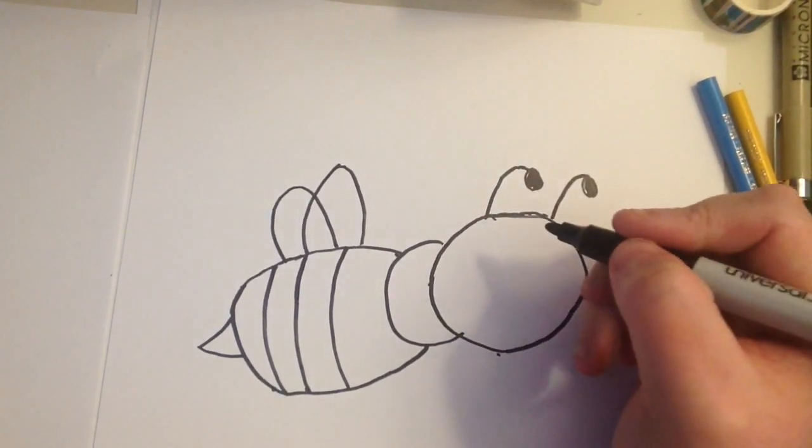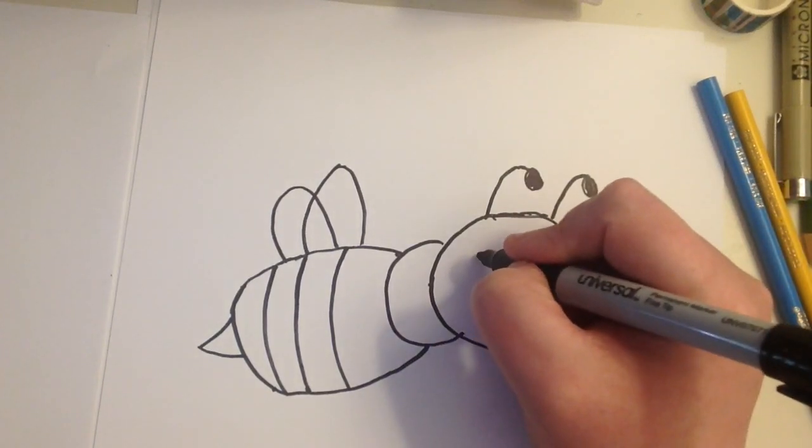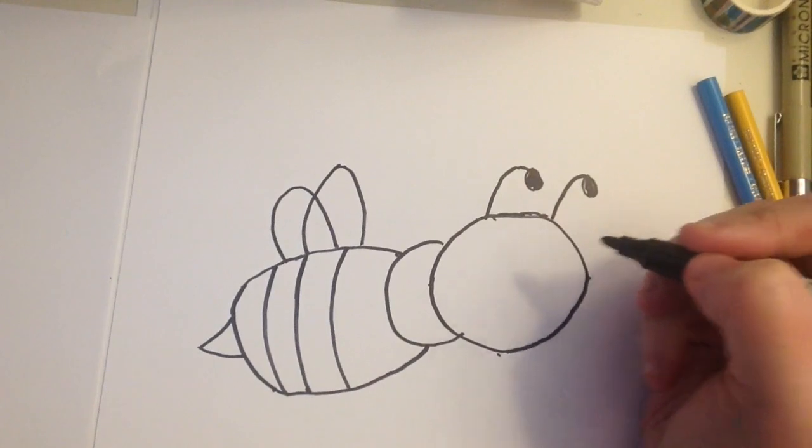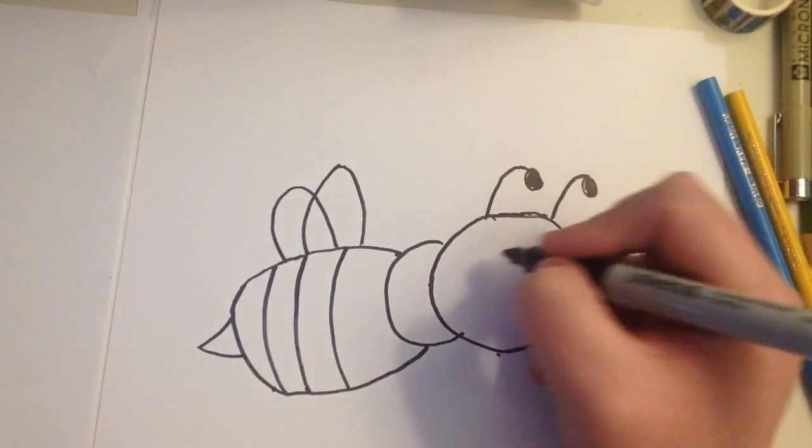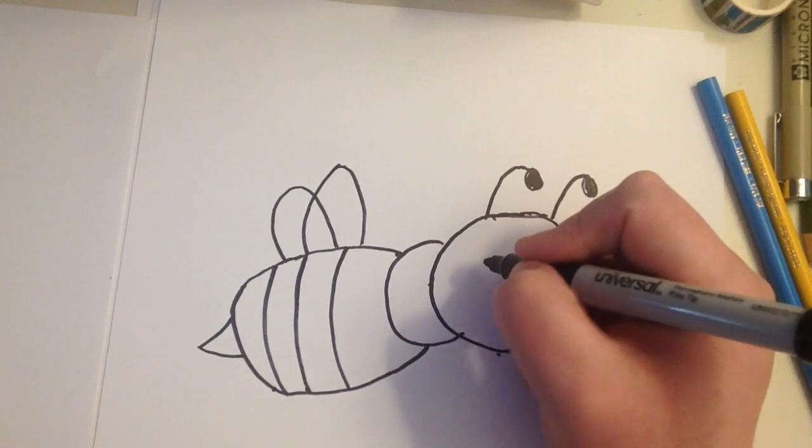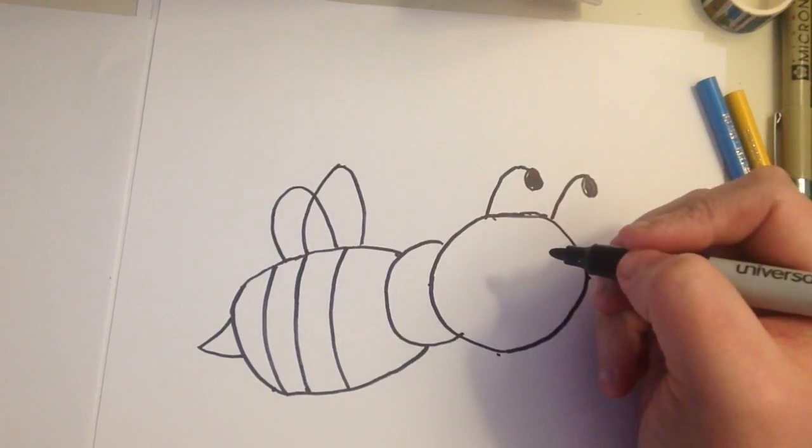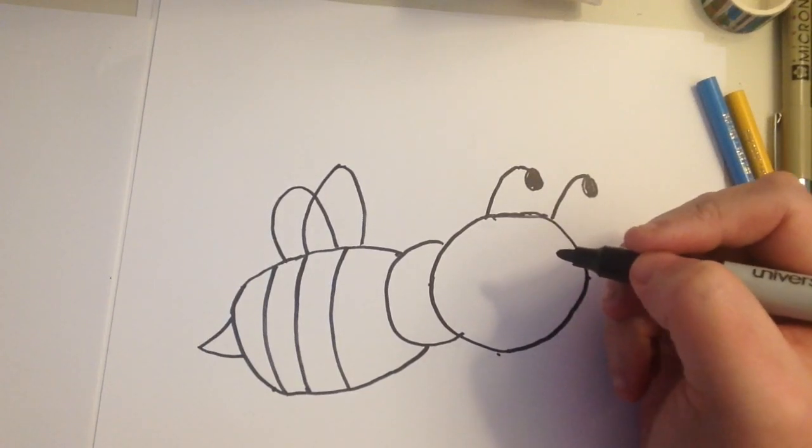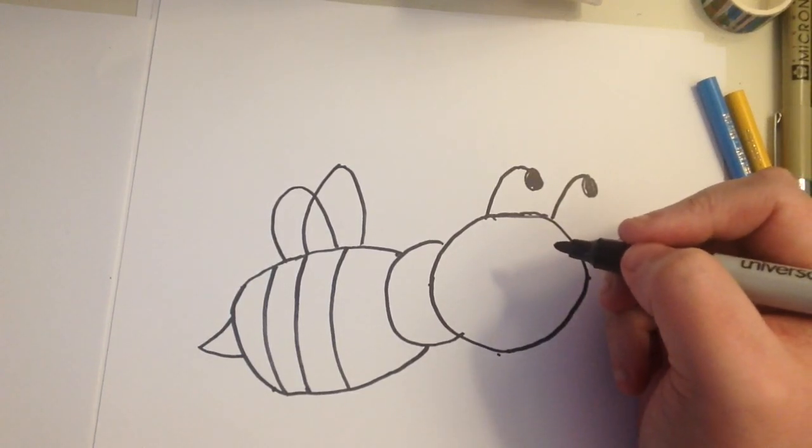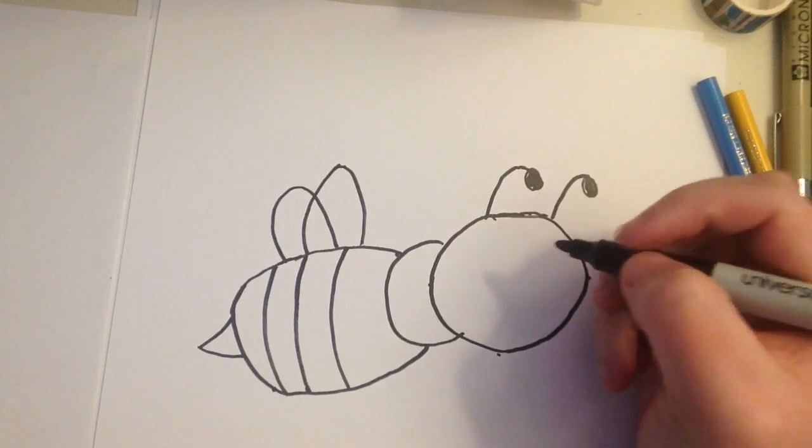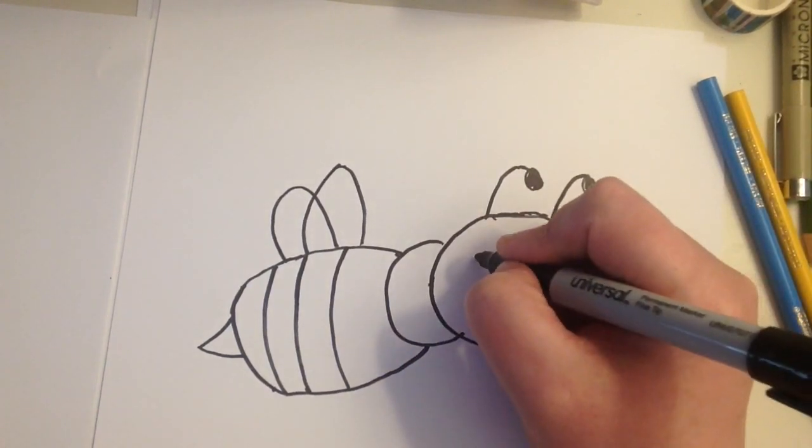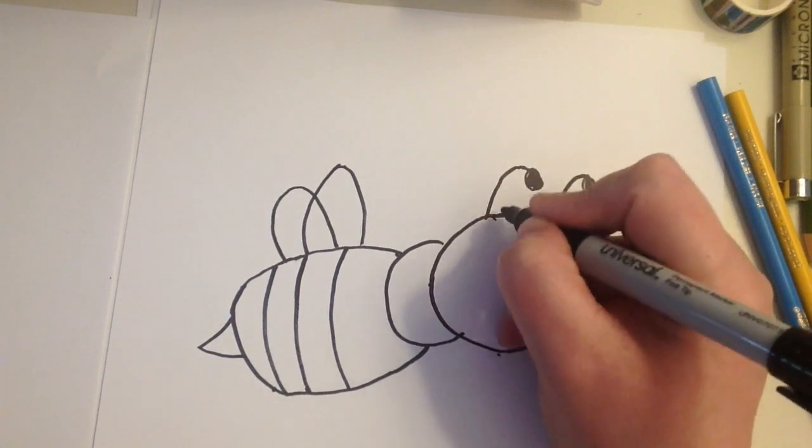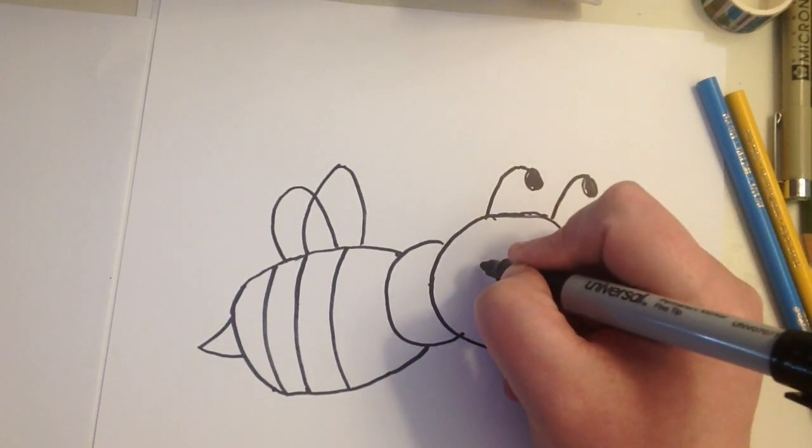So now we're just going to do the face. And then we'll color it in all together. So, for the eyes. So now we should have the face and the body with the head and body and the wings and the antenna. So now we're going to do the face. And again, just a quick reminder, if I'm going too fast, you can always pause the video or go into a slower setting. So, that's just a little tip. So, we're going to come down here from the antenna. And then we're going to place the eye.